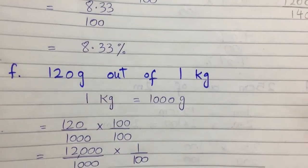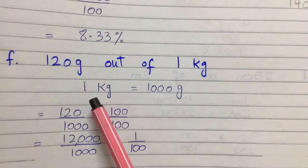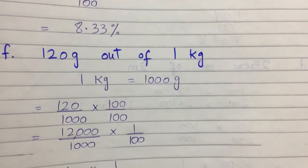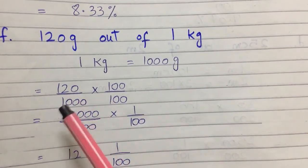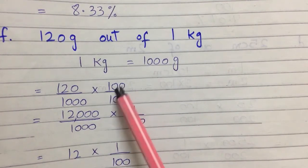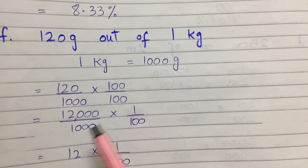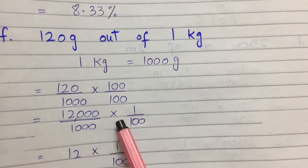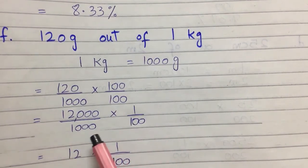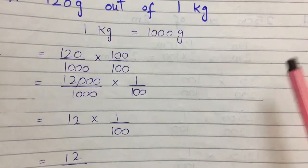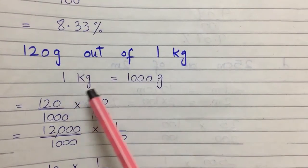Part f is: 120 grams out of 1 kg. 1 kg equals 1000 grams, so we convert 1 kg into grams. Write it as a fraction: 120 divided by 1000, multiplied by 100 percent. Multiplying gives 12000 divided by 1000, multiplied by 1 by 100. Dividing these gives 12, so the answer is 12 percent. The percentage of 120 grams out of 1 kg is 12 percent.